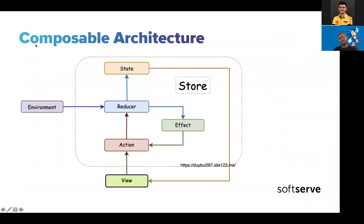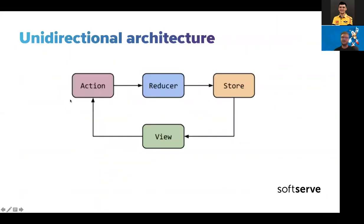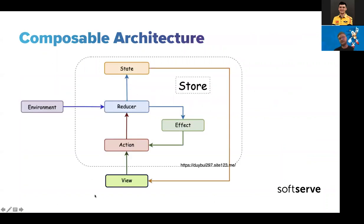Here is the diagram for The Composable Architecture. As you can see, it's pretty similar to unidirectional architecture. We have view, action, reducer, and store. It's actually quite similar — we have view, action, reducer — and we have additional layers here: store and state.